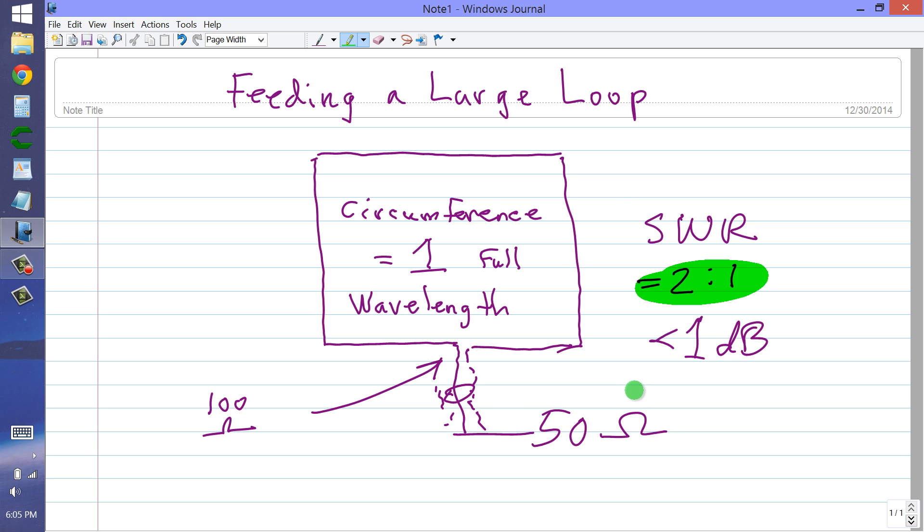But if you are in fact adamant about getting a perfect system out of this, if you are adamant that your system attain perfection, in theory, what you can do is you can run a quarter wavelength section of 75 ohm balanced line between a balun and your antenna.